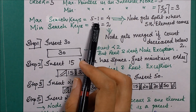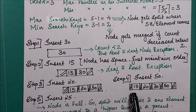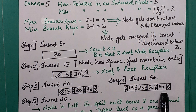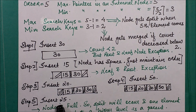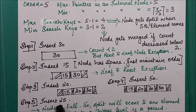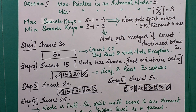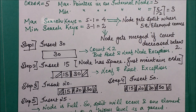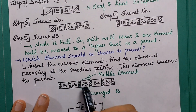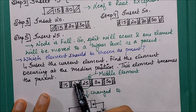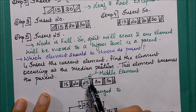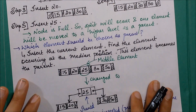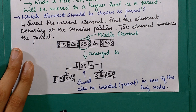Finally we insert 25. The maximum number of search keys allowed is 4, so the node was completely full. When we start the insertion of 25, a split occurs. We first insert the element, then perform the split. We find the middle element, move it to a higher level as the parent.